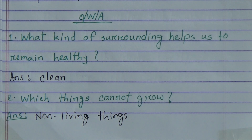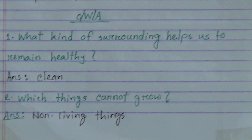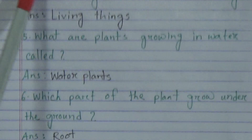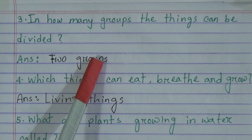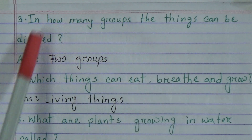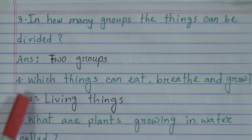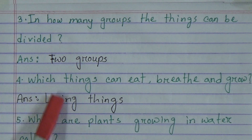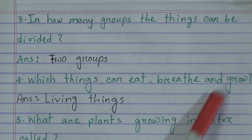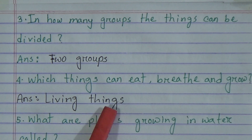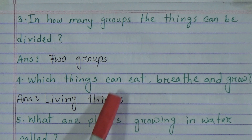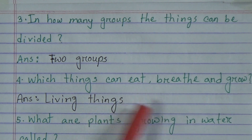Number three: In how many groups can things be divided? Answer: two groups. Things can be divided into two groups. Number four: Which things can eat, breathe and grow? Answer: living things. Living things can eat, breathe and grow.